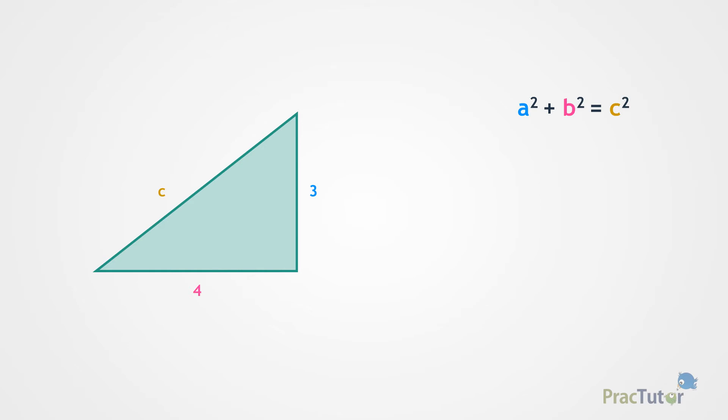So, if you have a right triangle like this, and you know that its sides measure 3 inches and 4 inches, you can use substitution to solve for the hypotenuse.